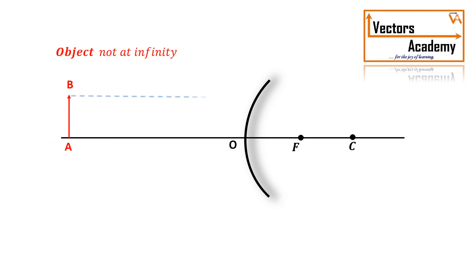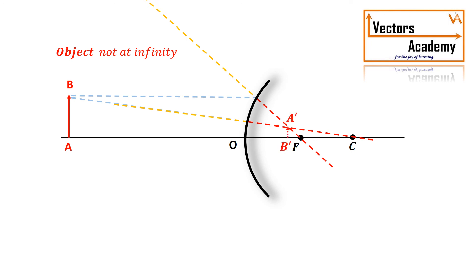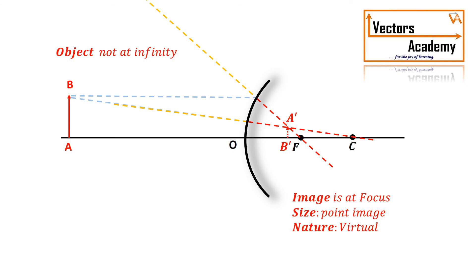If the object is brought closer to the convex mirror, the rays again diverge. The rays incident toward the center of curvature get reflected in exactly the opposite direction. Extending those rays on the opposite side, the image is formed between the center and the focus. The image is diminished, virtual, and erect. So no matter where the object is placed in case of a convex mirror, the image is always virtual and erect.